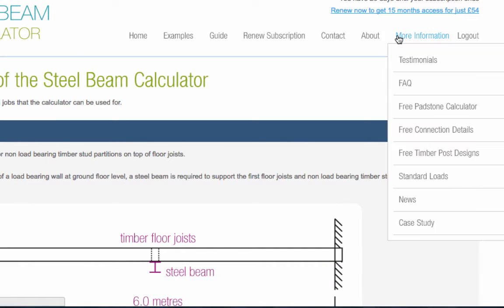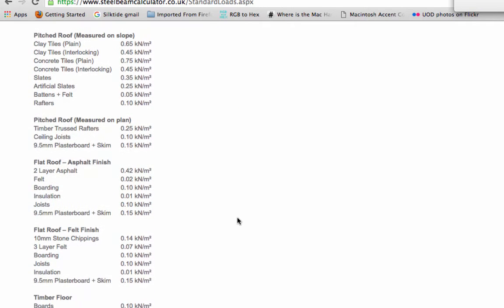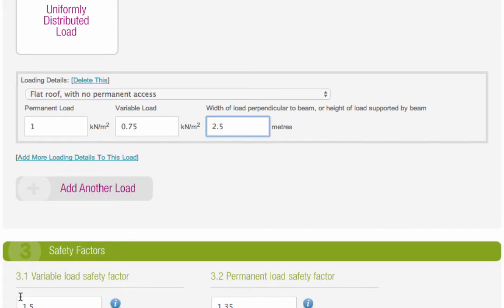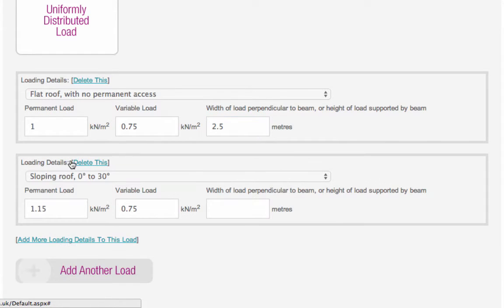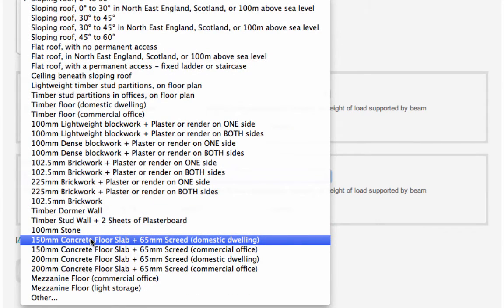We also have a list of standard loads for commonly used items such as clay tiles and rafters. You can add multiple loading details to each type. For example, more roofs, floors, walls, and so on. Or you can add another load type.